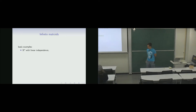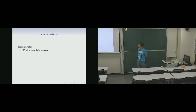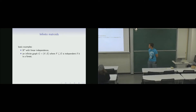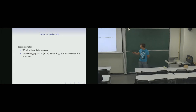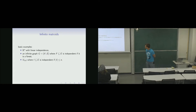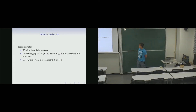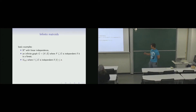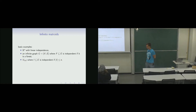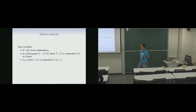Let me talk a little about infinite matroids and start with some basic examples. If we have an infinite vector space, then with linear independence it is an infinite matroid. If we have an infinite graph, then the subsets of the edge set which are acyclic — so they form a forest — are the independent sets of a matroid. Also, if we have an arbitrarily large ground set and take those subsets which have at most n elements for some natural number n, that is also a matroid. In an infinite matroid the rank being finite just means the independent sets are finite — the ground set is not necessarily finite.